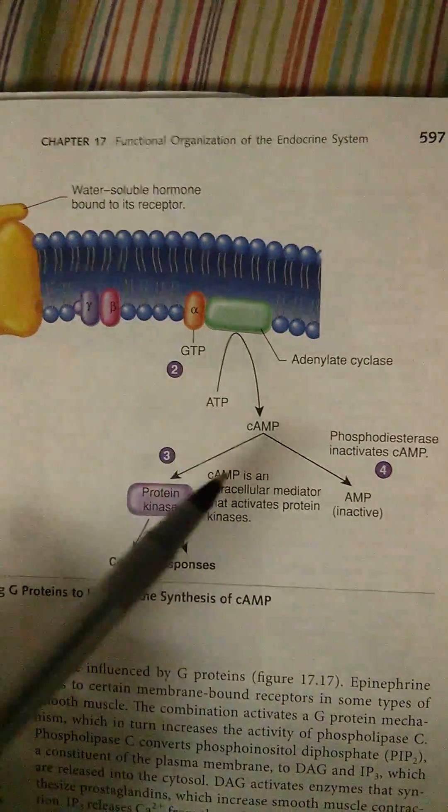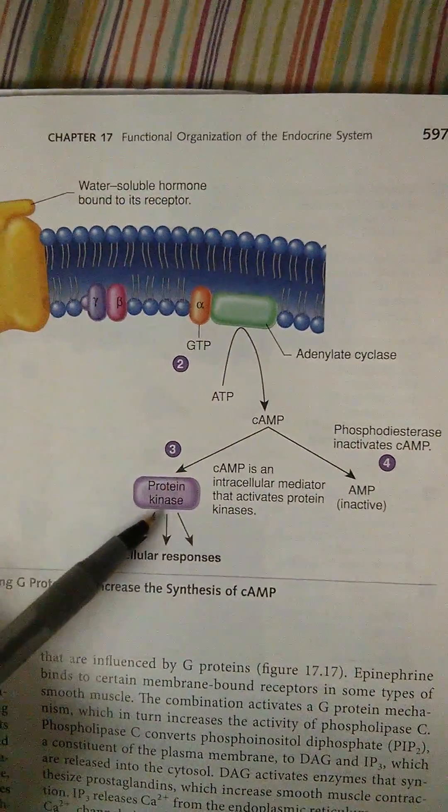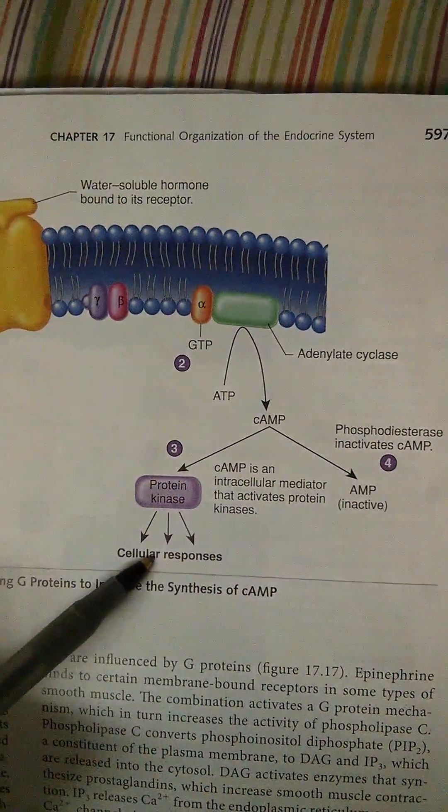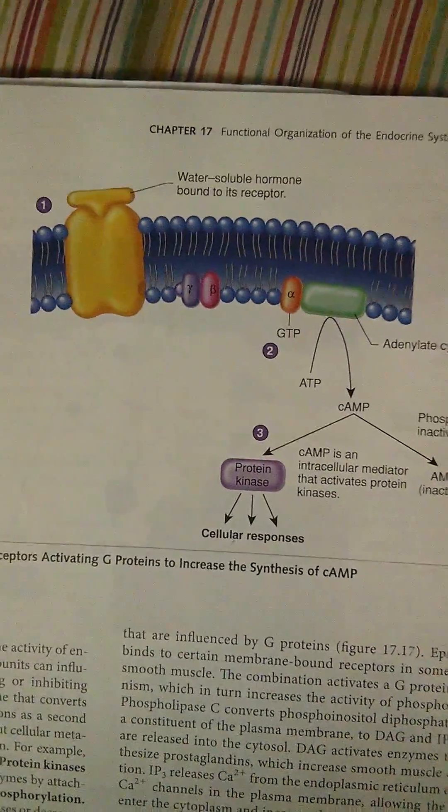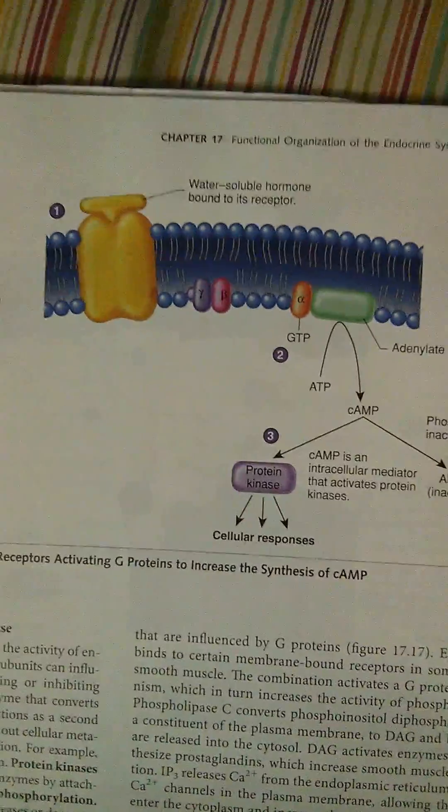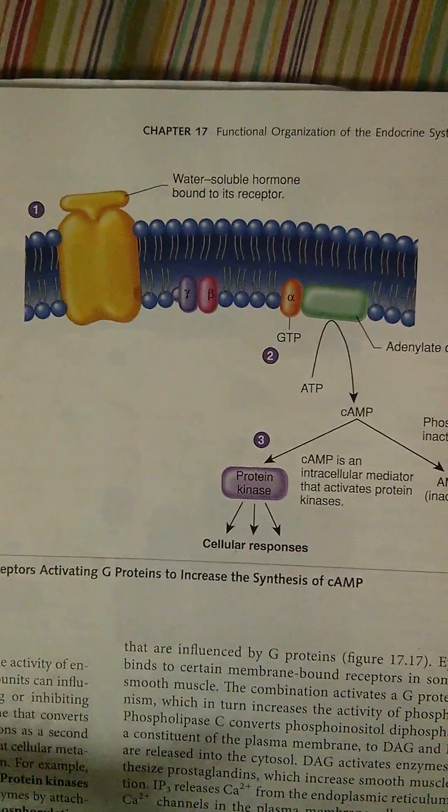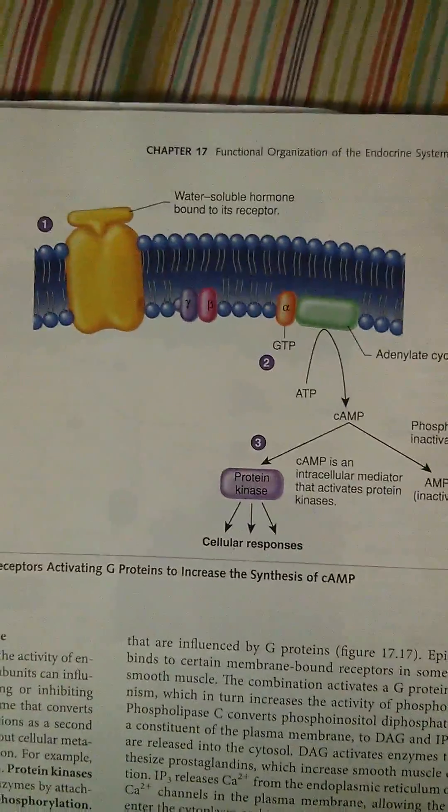And cAMP is important because it can help with making protein kinase, which eventually leads to the cellular response that was desired. So G-proteins show up a lot with A and P, but they typically follow a similar pattern. So if you understand the basic steps with the G-protein and the alpha going off alone, and all those different things, you'll be fine.